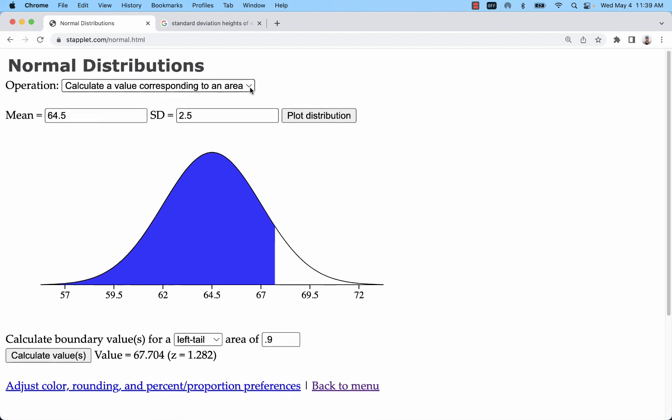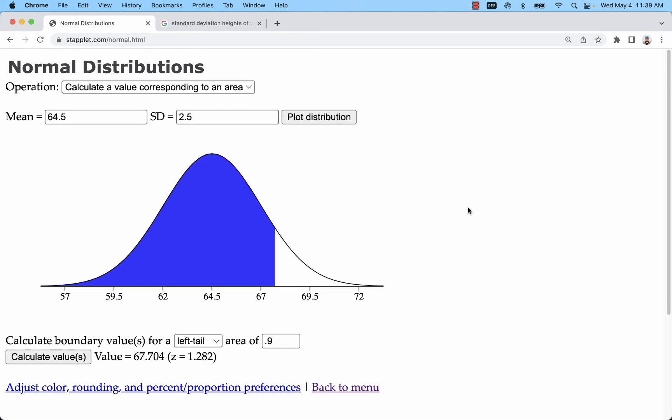You can always use a standardized distribution first and just convert between X and Z. There are formulas to do that as well.